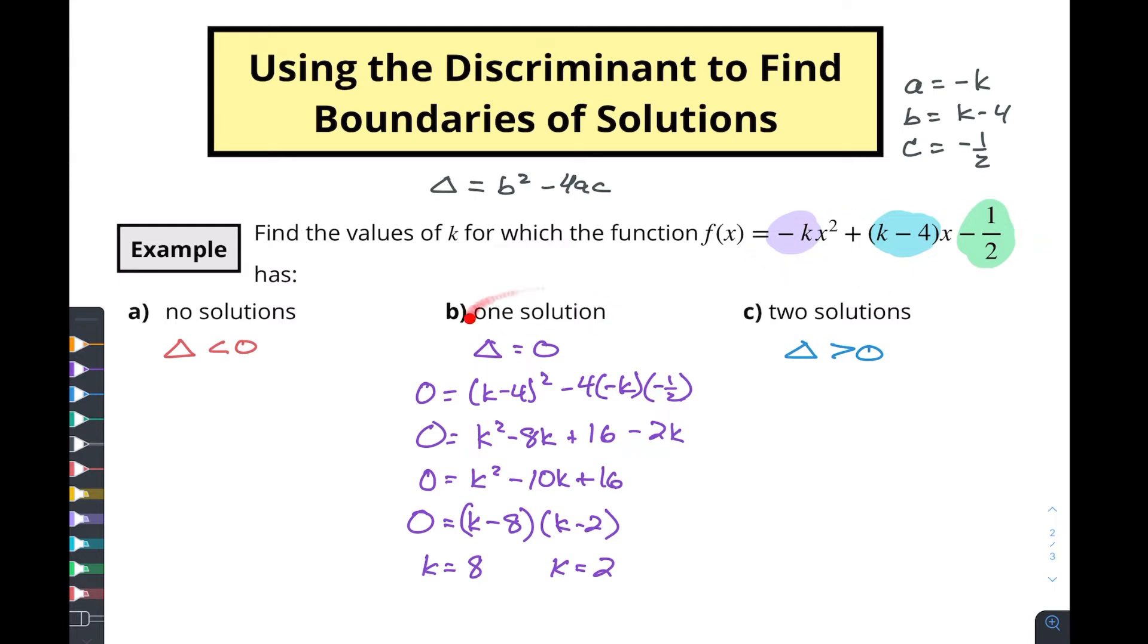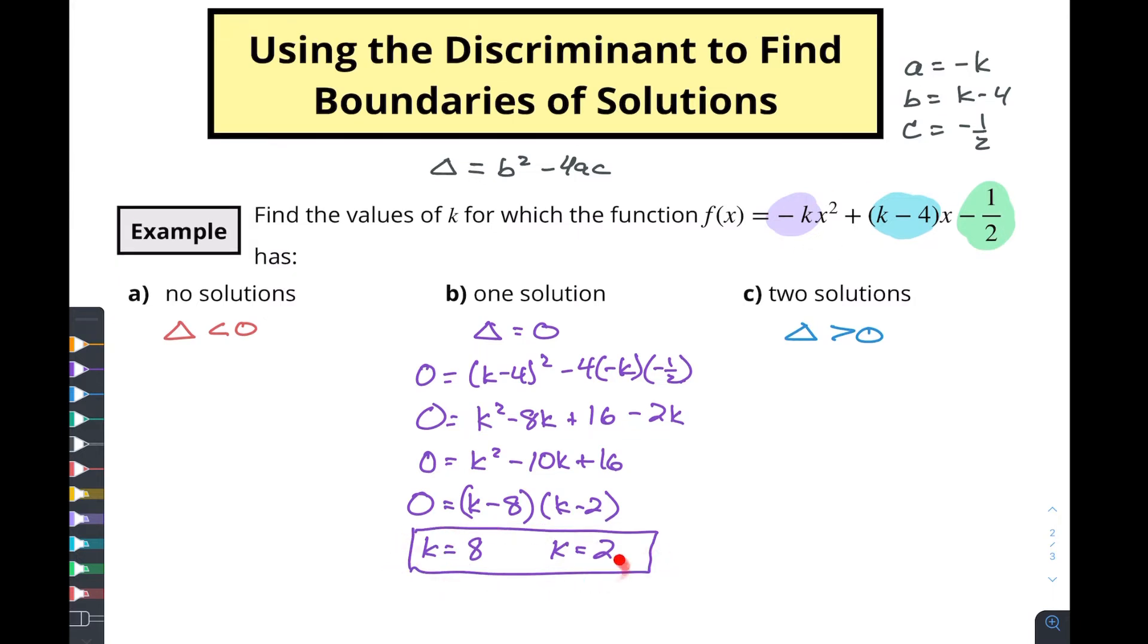We want to do a little bit of analysis on this to determine where is this thing going to be greater than zero, where's the discriminant going to be greater than zero, and where's the discriminant going to be less than zero. So we know that we've got boundary values of k equaling 2 and 8. I'm just kind of creating a number line, and if I want to consider these are my values of k, k is equal to 8 and k is equal to 2.